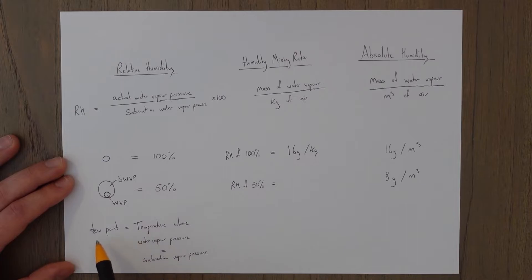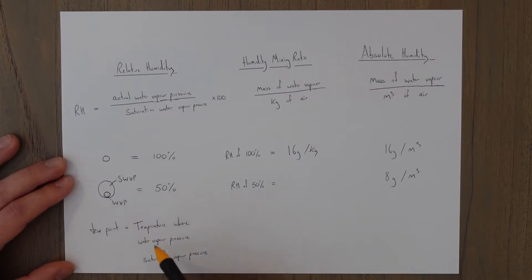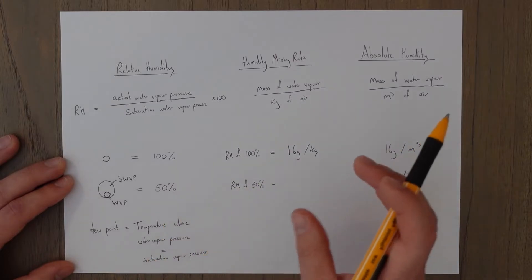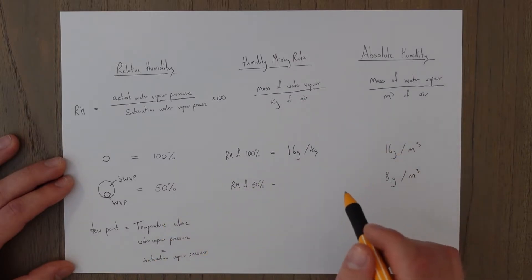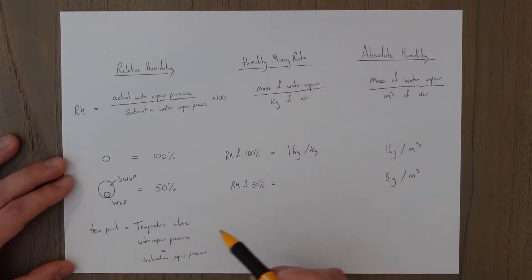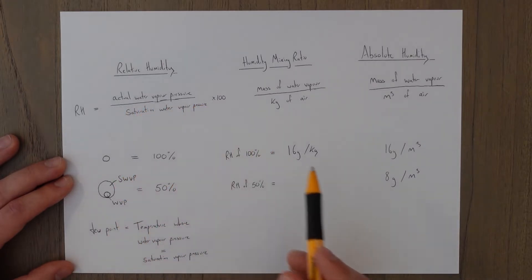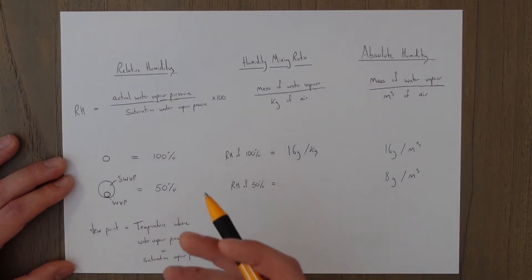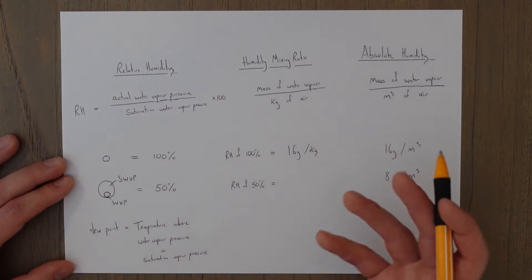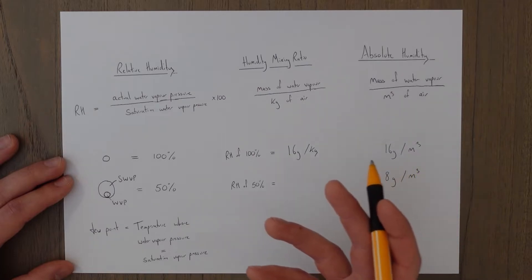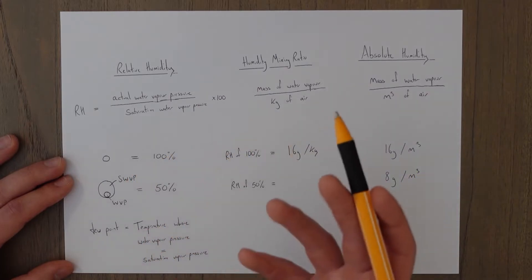There's a phenomenon called the dew point — a temperature at which the saturation vapor pressure and the water vapor pressure are exactly the same. What happens is that the saturation vapor pressure reduces down until it matches the actual water vapor pressure, and clouds start to form as the water condenses out. You can think of it as basically where the relative humidity becomes 100%.